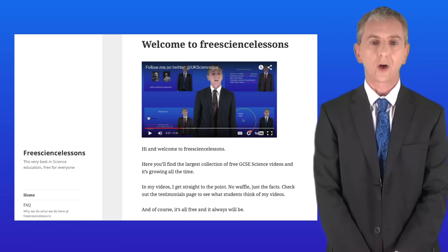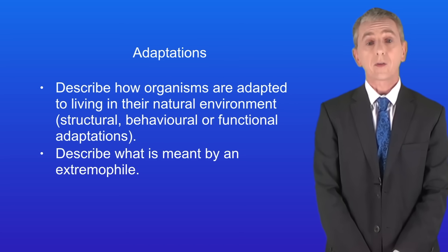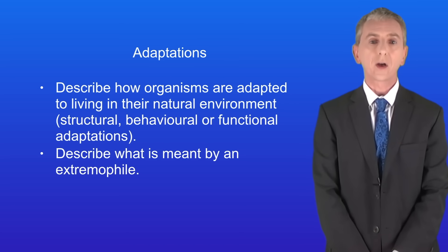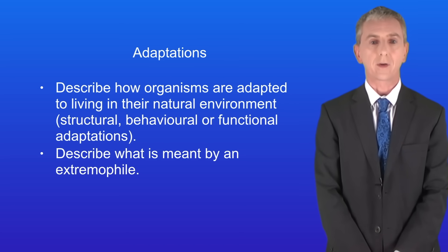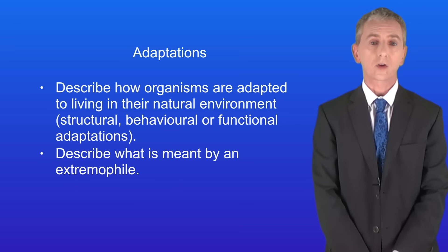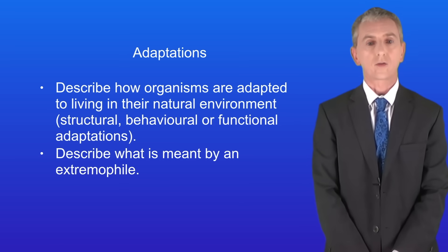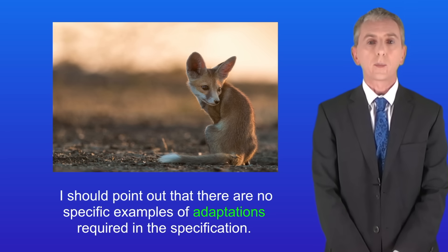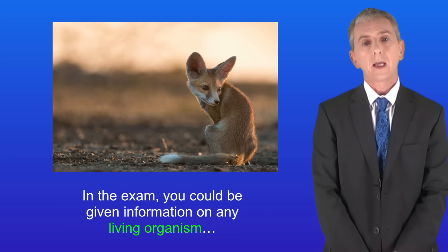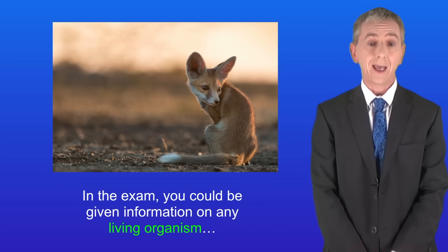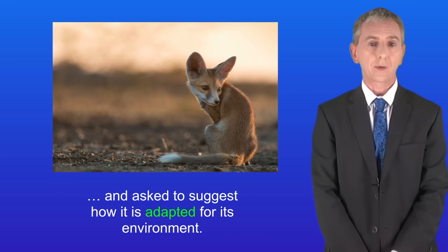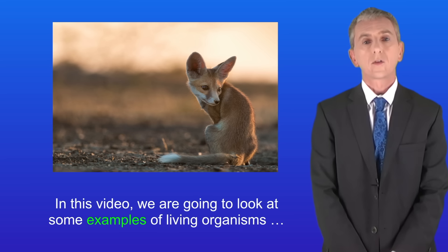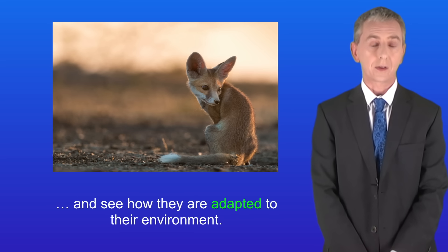Hi and welcome back to freesciencelessons.co.uk. By the end of this video you should be able to describe how organisms are adapted to living in a natural environment. These include structural, behavioral or functional adaptations. You should then be able to describe what's meant by an extremophile. There are no specific examples of adaptations required in the specification. In the exam you could be given information on any living organism and asked to suggest how it's adapted for its environment. In this video we're going to look at some examples of living organisms and see how they're adapted to their environment.